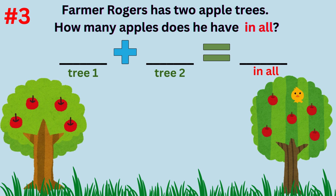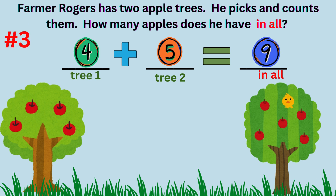Word problem number three. Farmer Rogers has two apple trees. How many apples does he have in all? The answer to the question is Farmer Jones has nine apples on his tree in all. The addition sentence is four apples on tree one plus five apples on tree two equals nine apples in all.